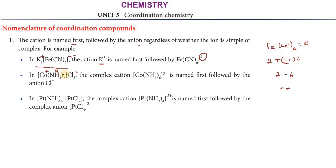For NH3 ligands, which are neutral molecules, the value is 0. So 6 into 0 gives 0. For a platinum complex, if NH3 is 0, then 0 into 4 gives 0, plus the oxidation state is plus 2. Chlorine is minus 1; minus 1 into 4 gives minus 4. So the total charge gives us the oxidation state of the central metal.